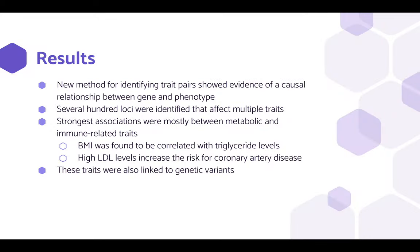Here are the results. A new method for identifying trait pairs showed evidence of a causal relationship between gene and phenotype. Several hundred loci were identified that affect multiple traits. The strongest associations were mostly between metabolic and immune-related traits. BMI was found to be correlated with triglyceride levels, and high LDL levels increased the risk for coronary artery disease. These traits were also linked to genetic variants.